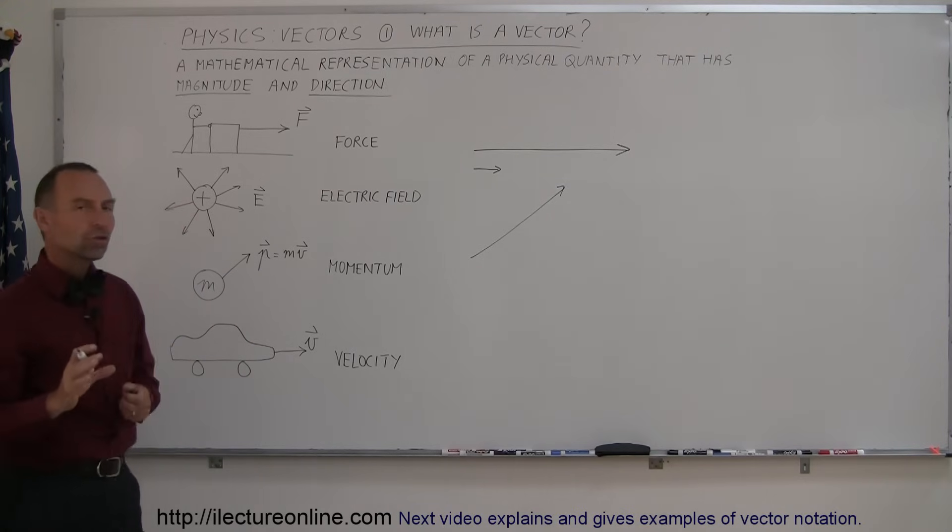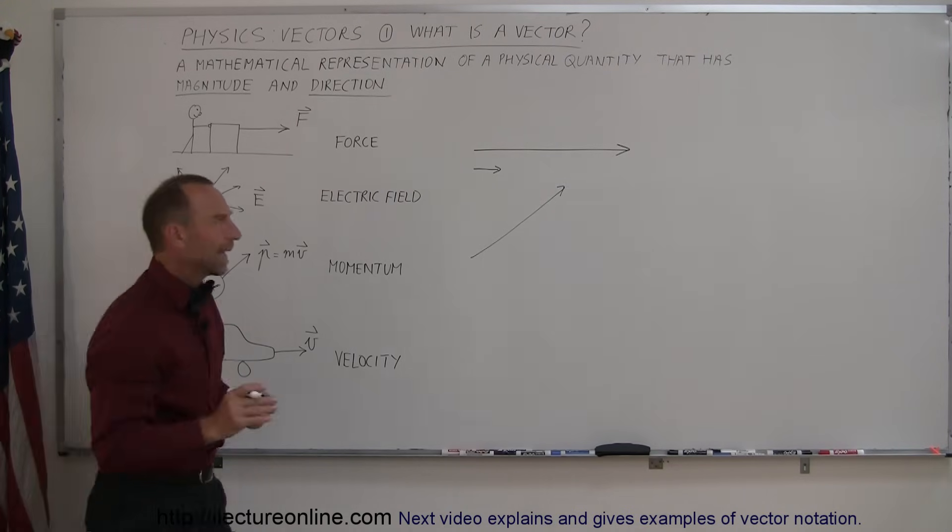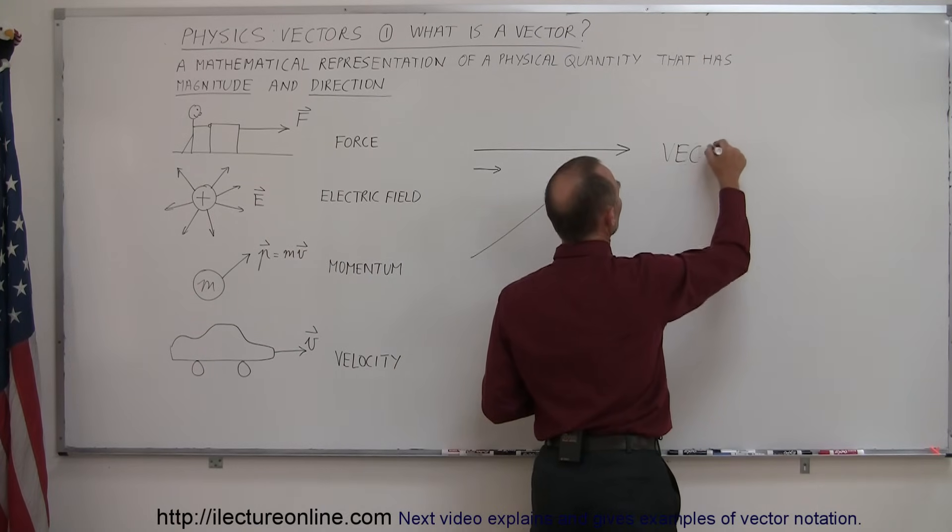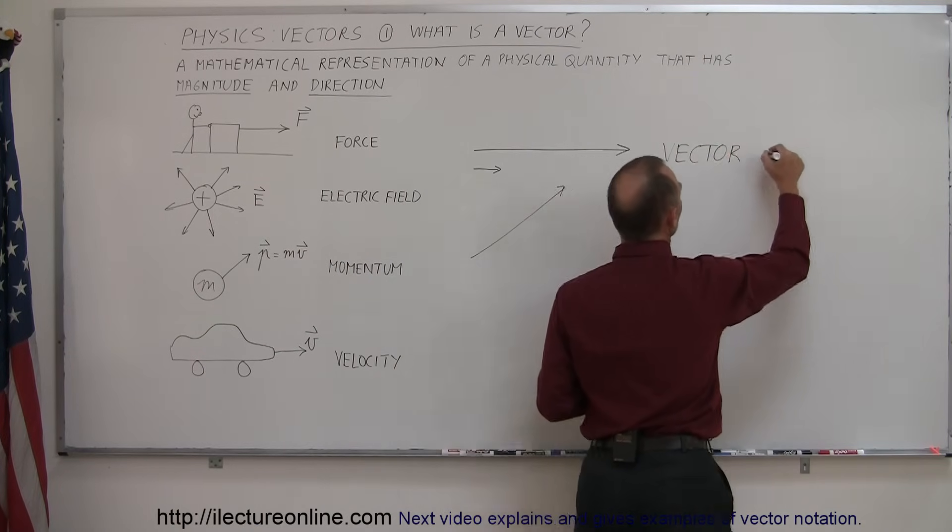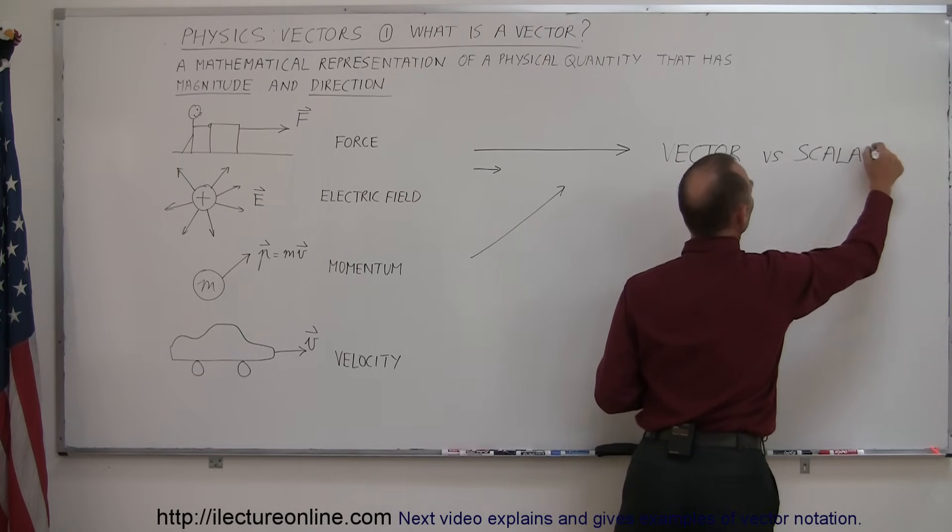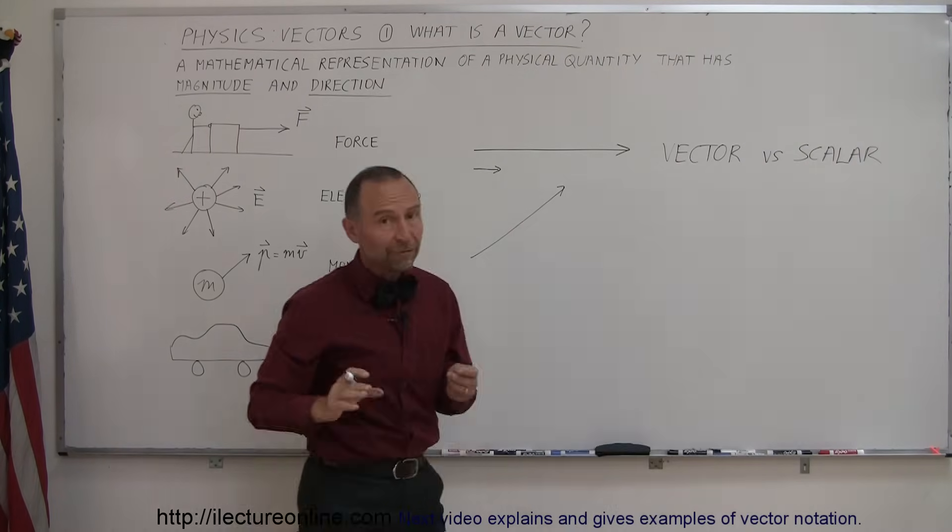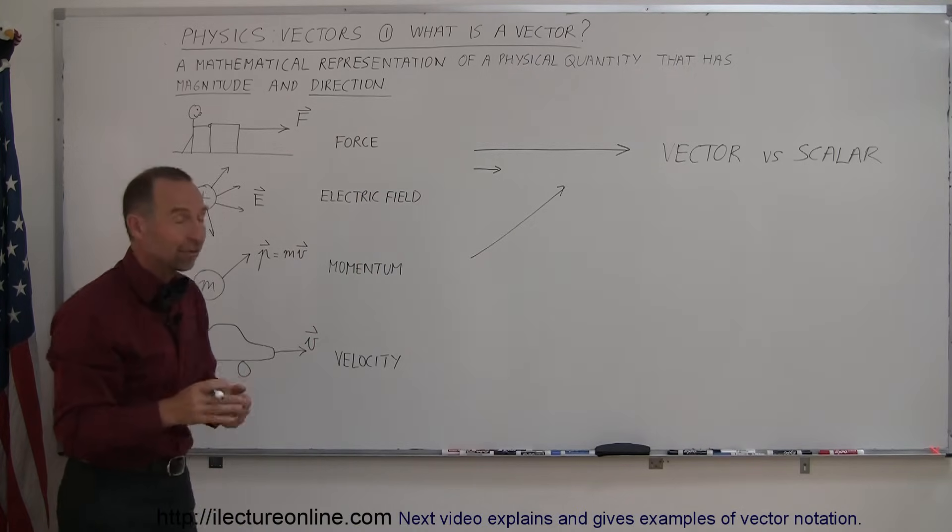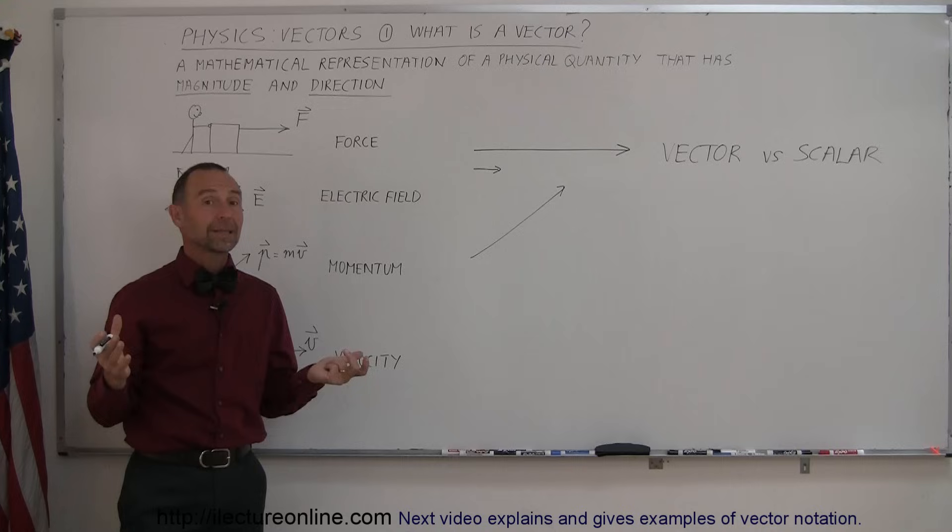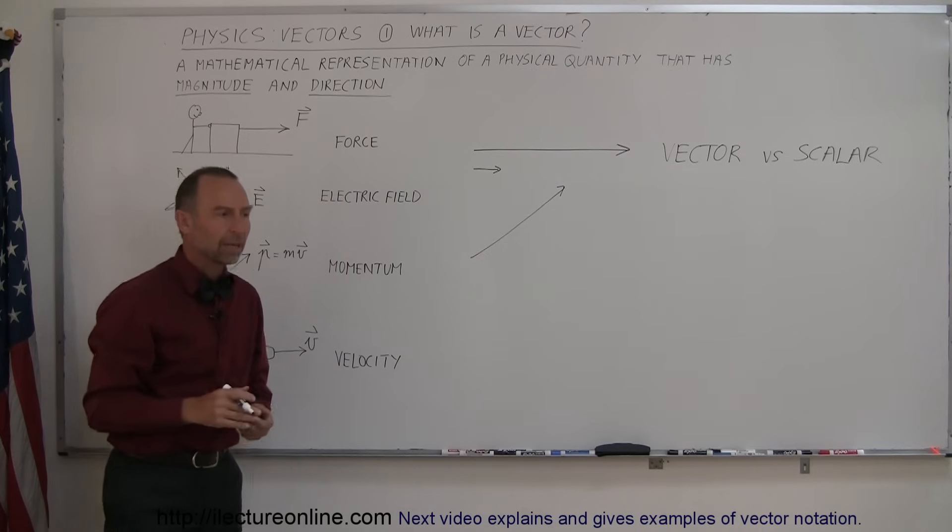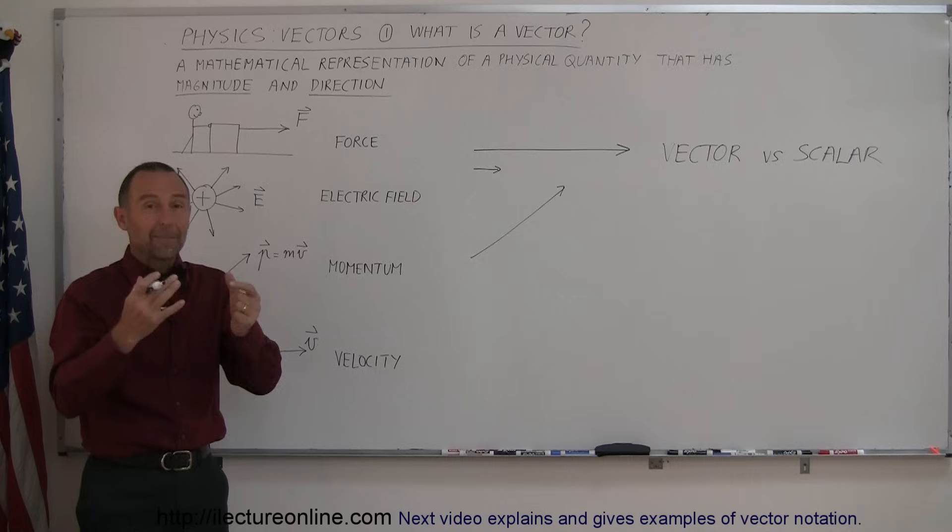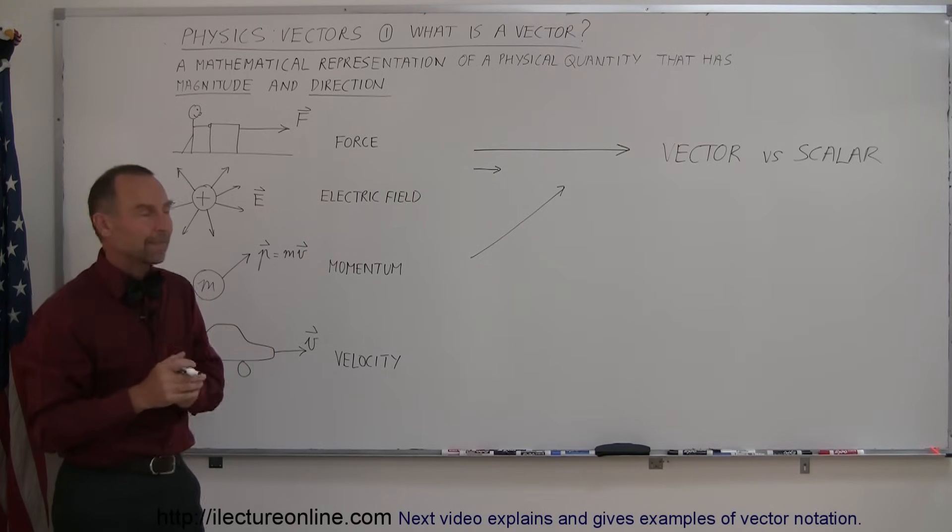So, I did mention another word, I mentioned the word scalar, so let's compare what a vector is versus a scalar. So, we have vector vs scalar to accentuate the difference between the two. A vector quantity is simply something that has both a magnitude and a direction. A scalar is something that only has magnitude. For example, if I talk about the mass of something, that has no direction, it's just how much stuff is in it, and so that's a scalar quantity.